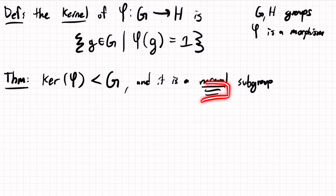I'll underline this three times because I'm emphasizing the fact this is a normal subgroup. When I underline something once, that means it's a definition.